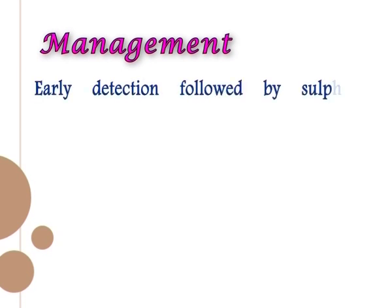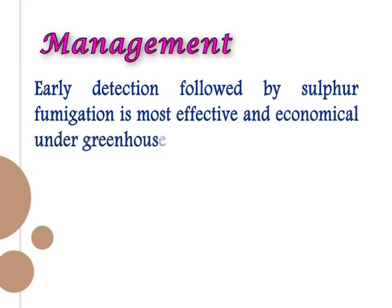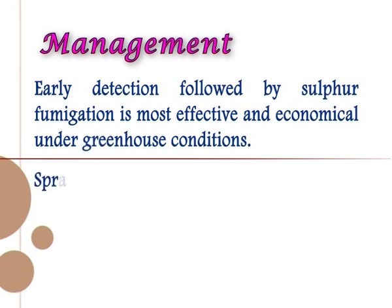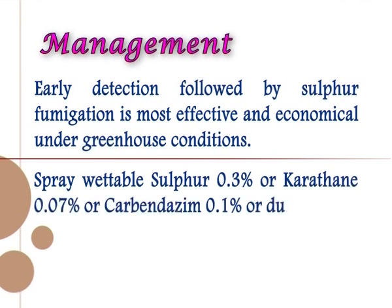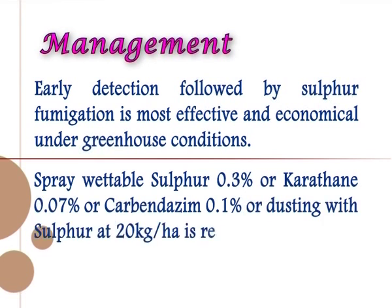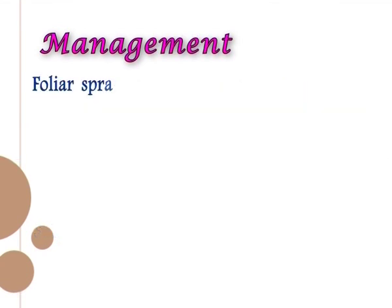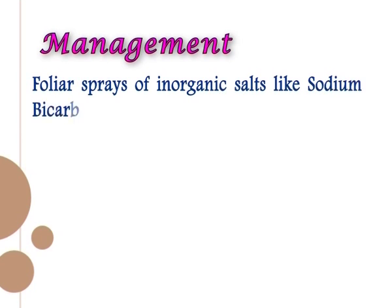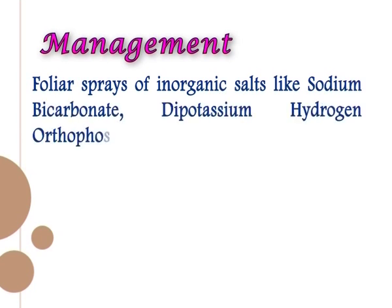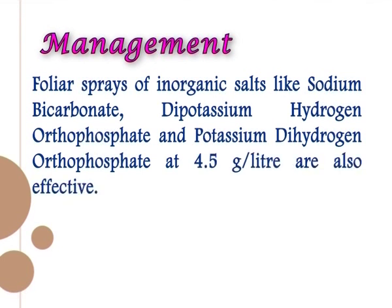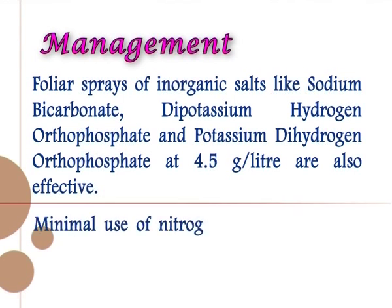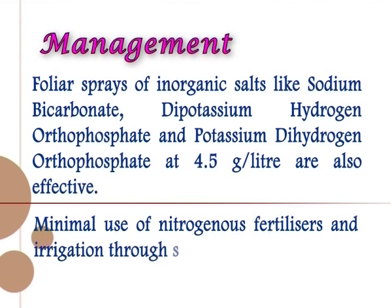Management: early detection followed by sulfur fumigation is most effective and economical under greenhouse conditions. Spray wettable sulfur at 0.3 percent, or carbendazim at 0.07 percent, or carbendazim at 0.1 percent, or dust with sulfur at 20 kg per hectare. Foliar sprays of inorganic salts like sodium bicarbonate, dipotassium hydrogen orthophosphate, and potassium dihydrogen orthophosphate at 4.5 grams per liter are also effective. Minimize use of nitrogenous fertilizers and irrigation through sprinklers.